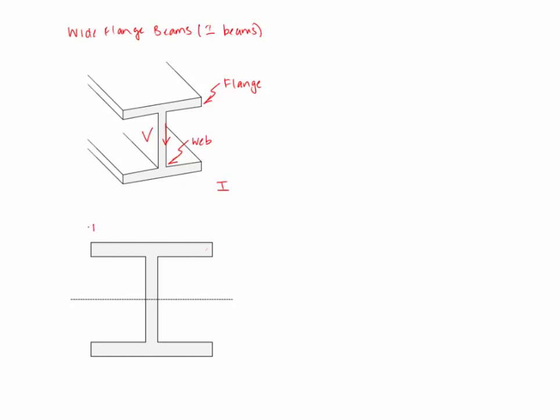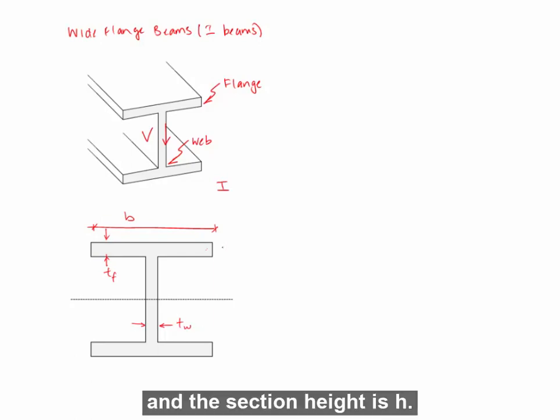And this cross section has the following dimensions. For the flange, a base width of B, and a thickness of TF. For the web, a thickness of TW. And the section height is H.